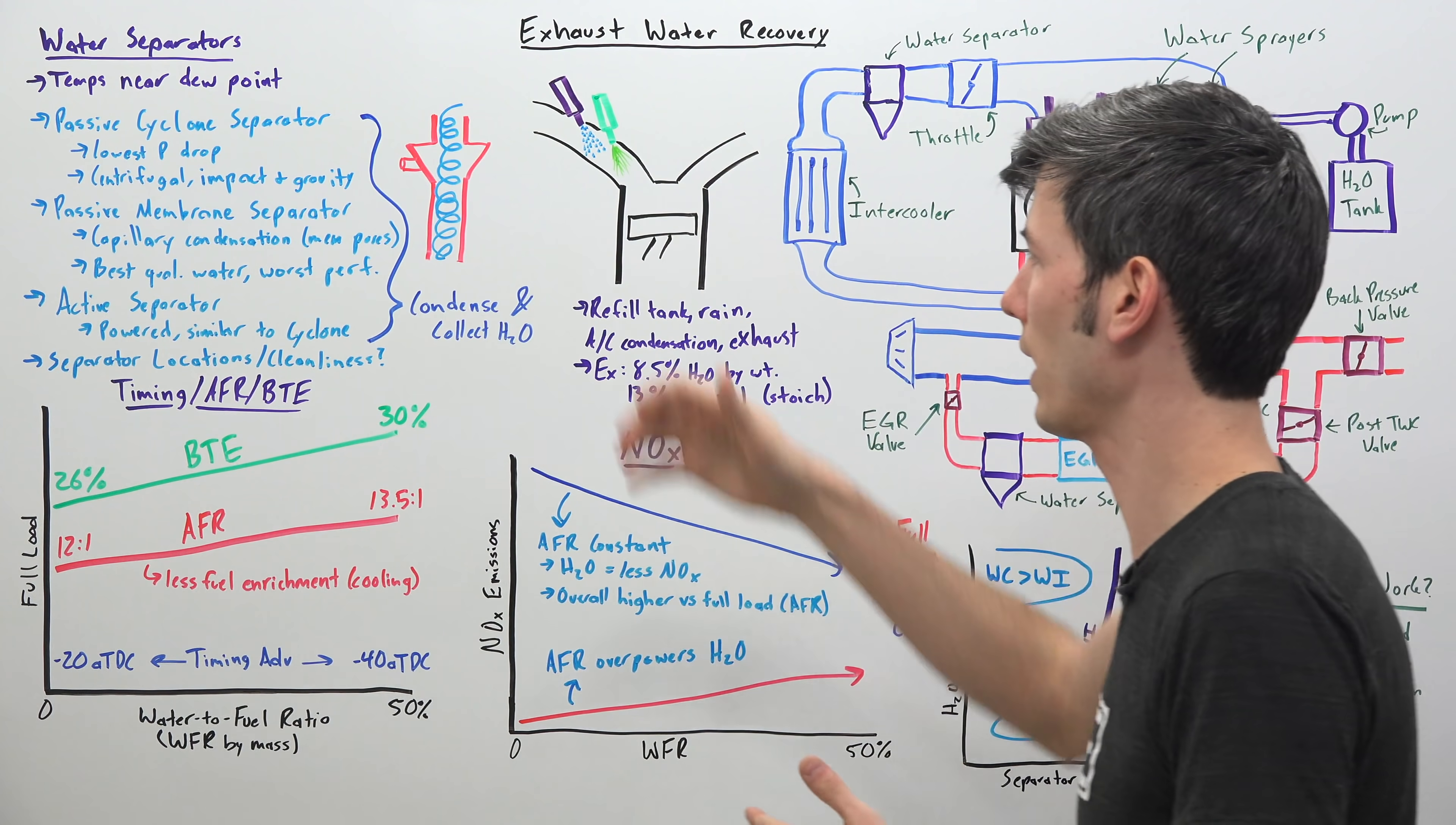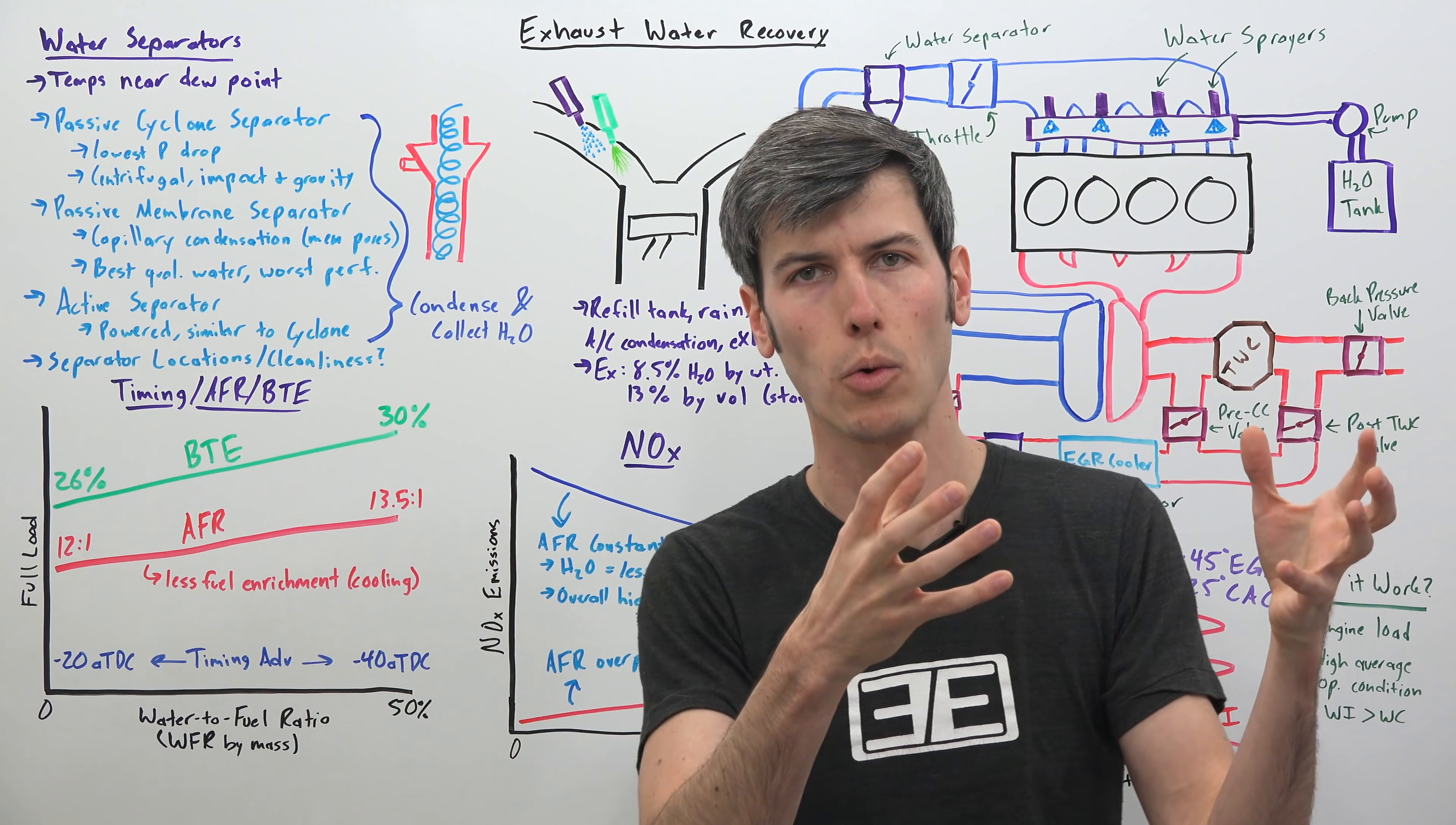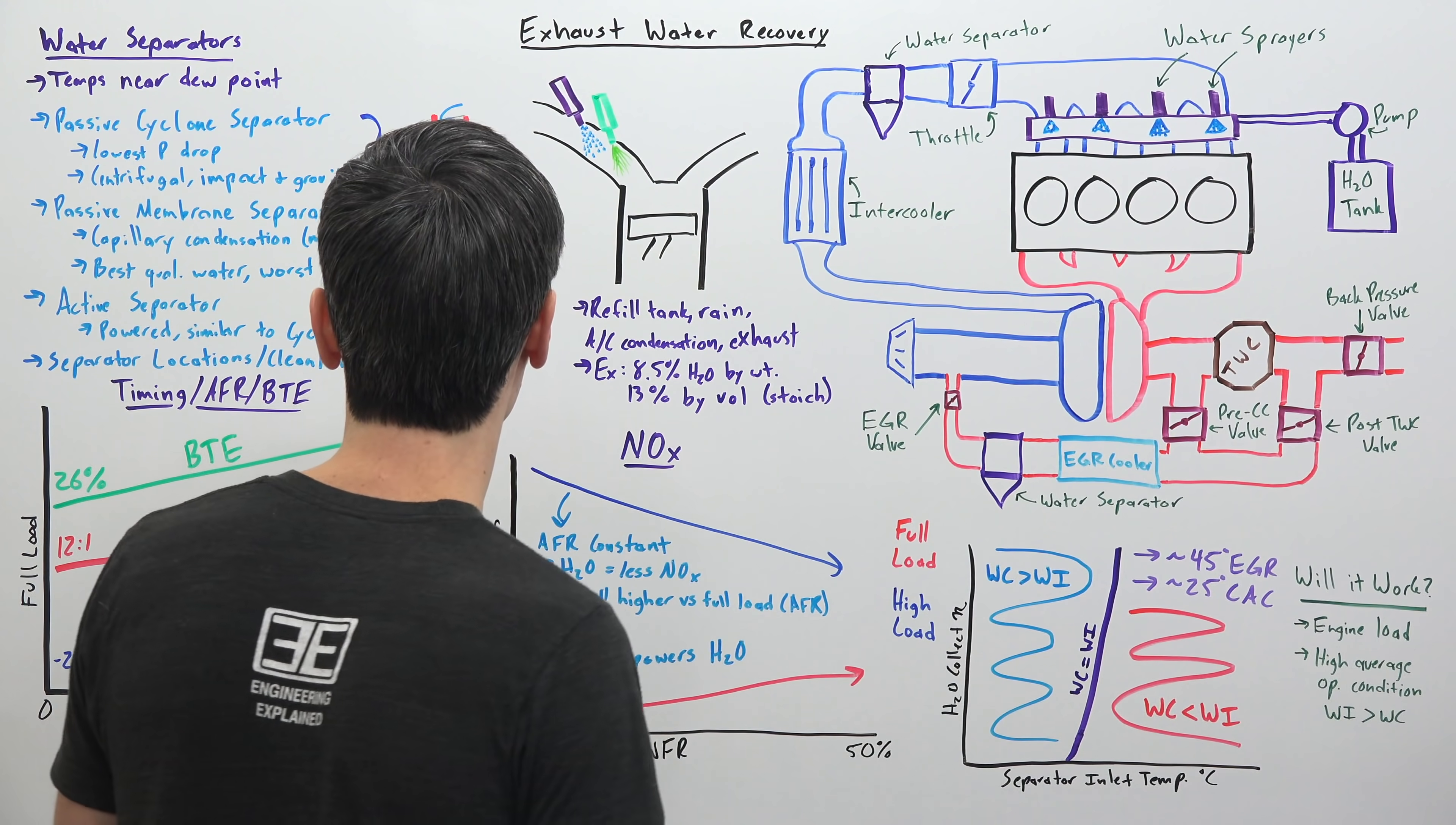And then they also used an active separator which was very similar to the passive cyclone separator except it was actually powered, it required an electrical current to go to it to activate it. Now regardless of which separator is used they all have the exact same goal essentially. They want to condense the water out of that air that's passing through it, collect it, and send it to a tank where it can be used with the water injection system.